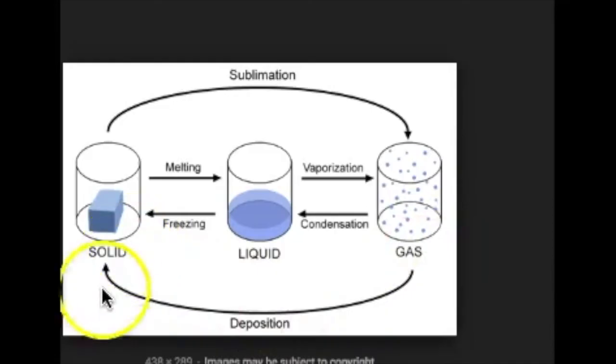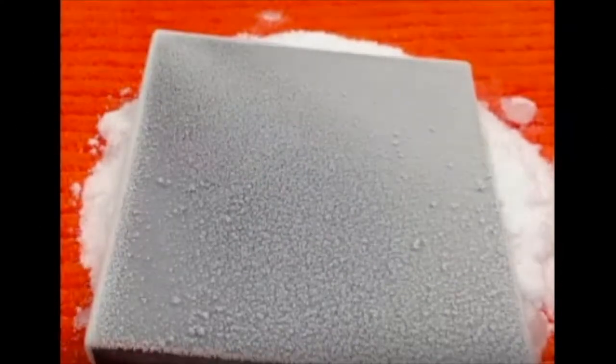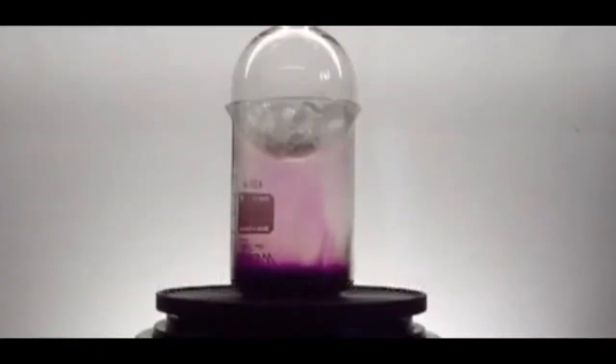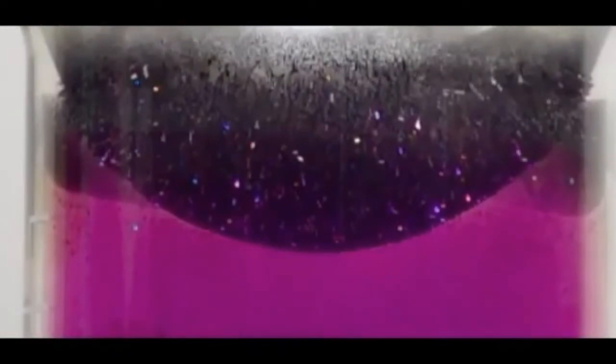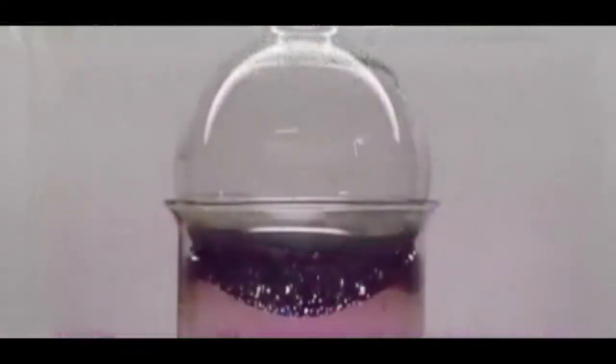What about gas directly to solid? That's deposition. Deposition is when a gas changes or deposits directly into a solid. This usually happens when a gas is brought to a temperature below its freezing point or melting point. The particles in the gas are moving rapidly, but the temperature slows them down until they are only vibrating in place and are tightly packed together. Seen here with iodine.